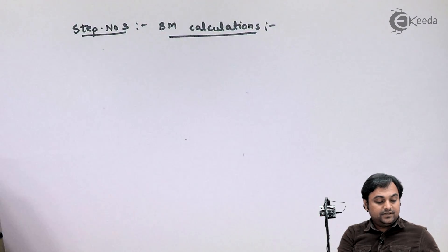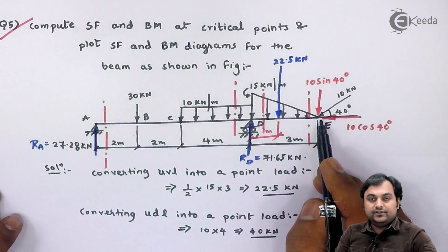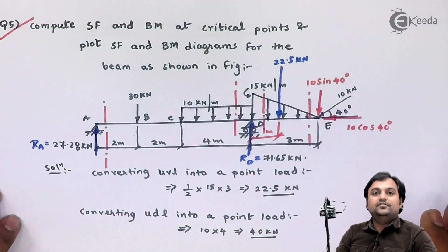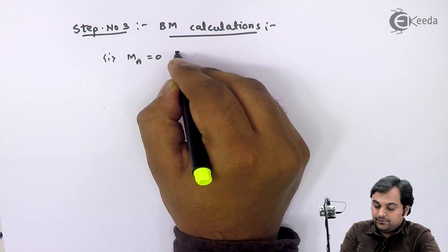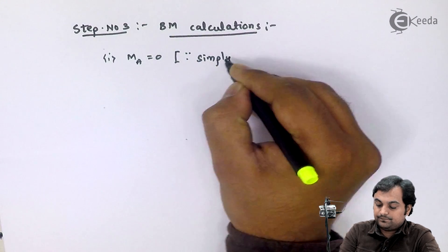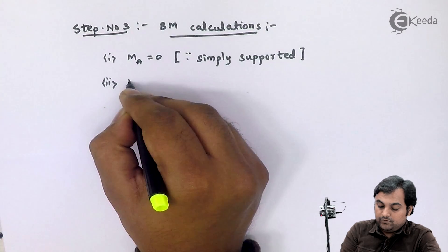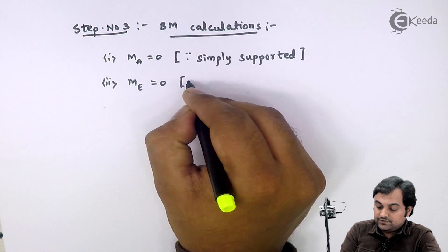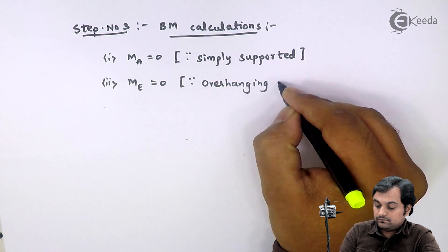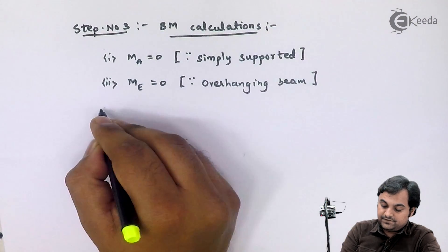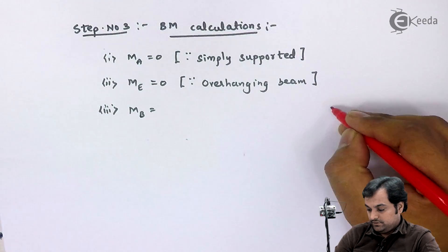As we can see in the given beam, it is simply supported at one end and free at the other end. At the simply supported end bending moment will be zero, so moment at A is equal to zero since it is simply supported. Next, moment at E is equal to zero since it is an overhanging beam. Next I will be calculating moment at B, and for that we should know the sign convention.